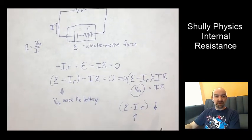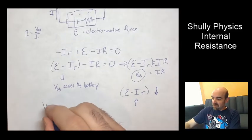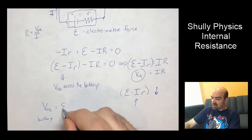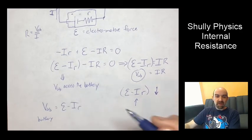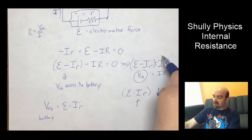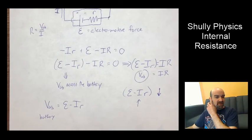All right. So two things to work with here. So VAB across the battery is epsilon minus I r. And we put that all together in the circuit. That's where we're going to use this tool here. So as an example,